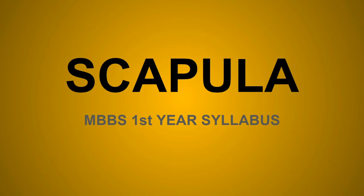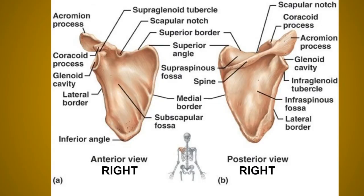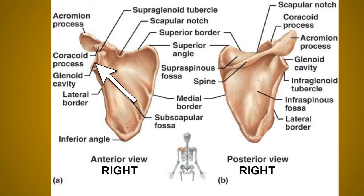Hello everyone, today we will discuss the bone scapula. First, you should know which side scapula is present in front of you in the viva. For side determination, the lateral or glenoid angle is present at the lateral side and is large, bearing the glenoid cavity as you can see in the diagram. The glenoid cavity is present at the lateral side to form the shoulder joint along with the humerus bone.